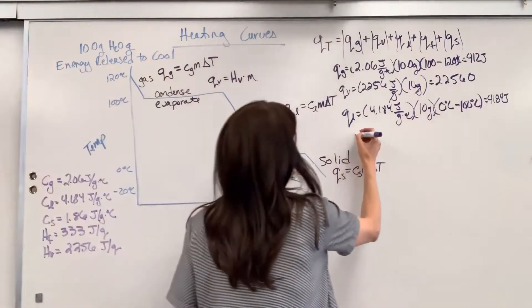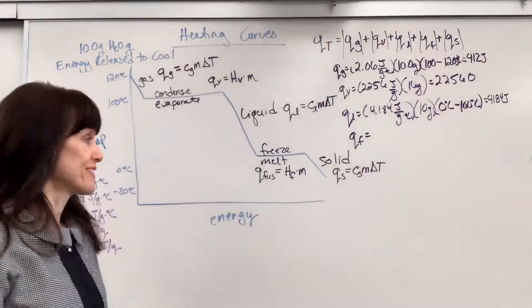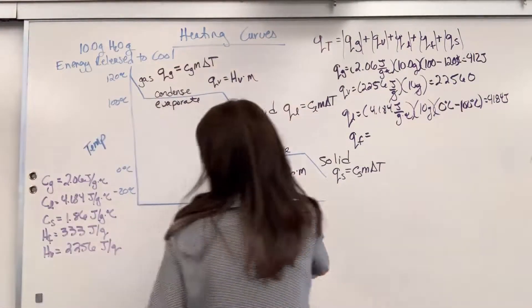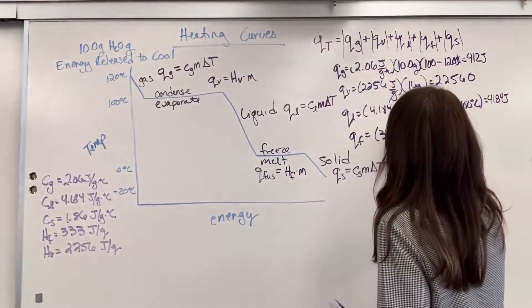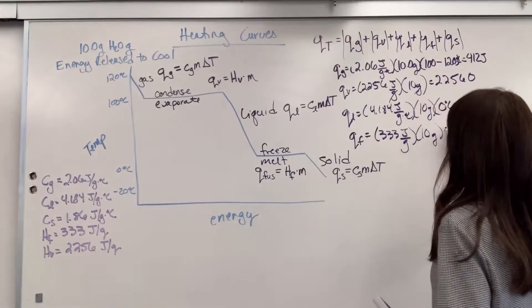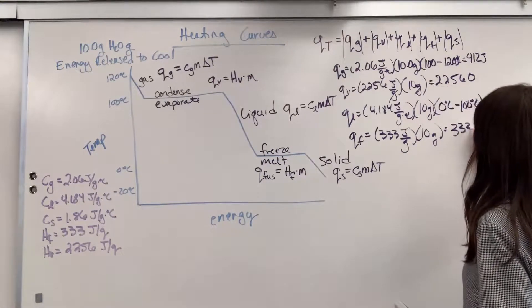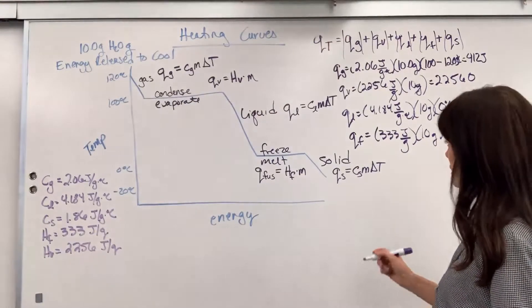Now, we're going to do Q of fusion. So, this is going to be our freezing. Heat of fusion, look at my table, there it is. 333 joules per gram times my 10 grams. That is going to give us 3,330 joules that will be released when it freezes.